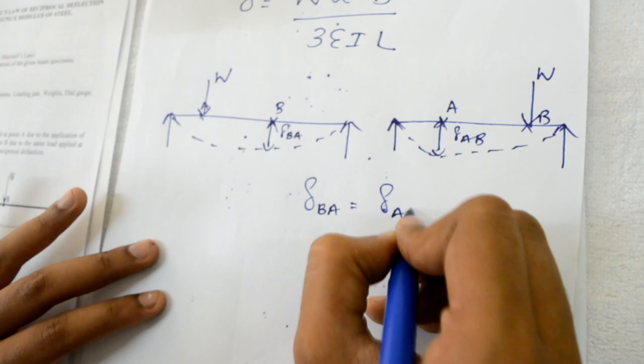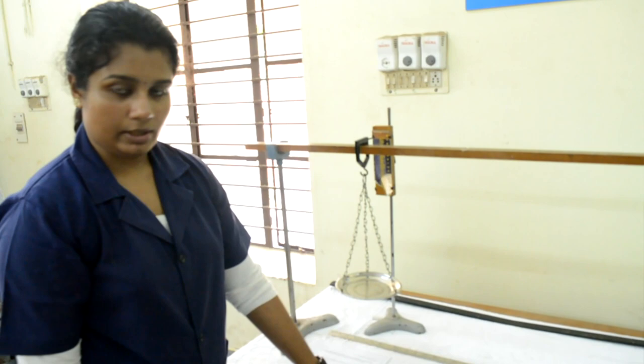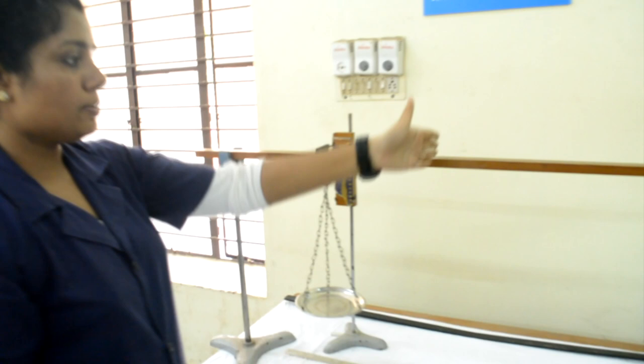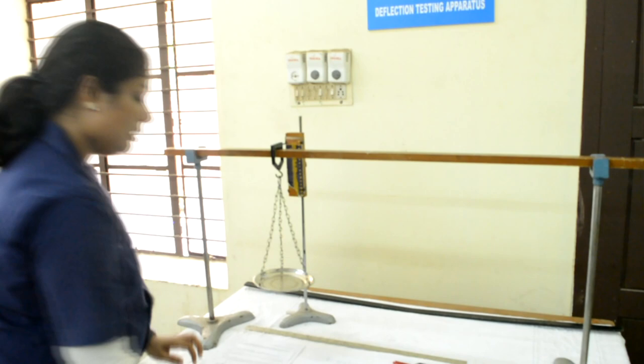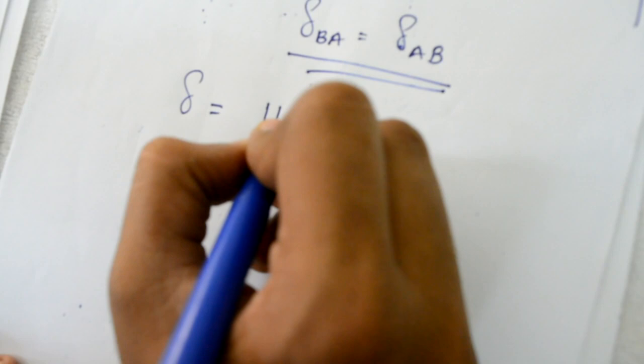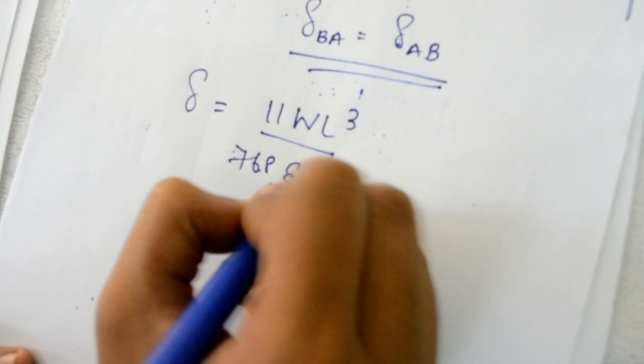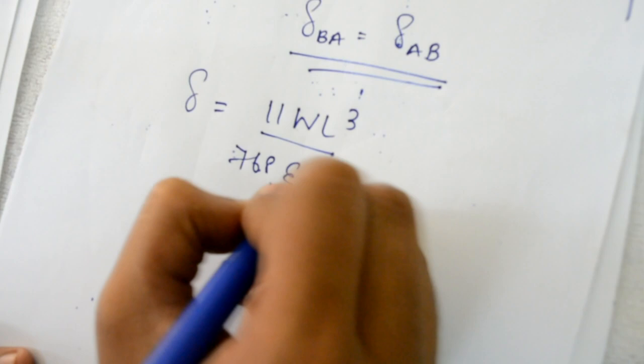That is, deflection at B due to the load at A and deflection at A due to the load at B must be equal. This can be verified by taking the span, that is the mid span. Here we know the deflection value, that is delta equals WL cubed by 48EI. And when coming to the quarter span, the equation for deflection is 11WL cubed by 768EI. So from here, when the load is applied at quarter span, we can measure deflection at mid span and vice versa and verify our theorem.